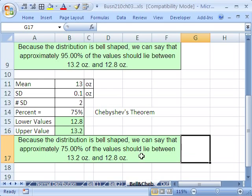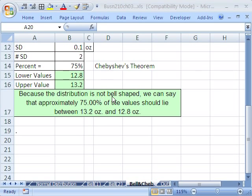In this case, we can just say, because the distribution is not bell-shaped, we can say that approximately 75% of the values should lie between 13.2 ounces and 12.8 ounces. Still the same bookends, we just have to use a much smaller percentage or proportion.